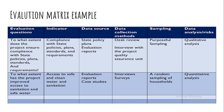Another example of an evaluation question is: to what extent has the project improved access to sanitation and safe water? The indicator is access to safe and clean water and sanitation. Data sources can include evaluation reports and case studies of households that have had improved access to safe and clean water. Collection methods include interviews, surveys, and observations, with a random sampling technique applied to households involved in the project implementation.